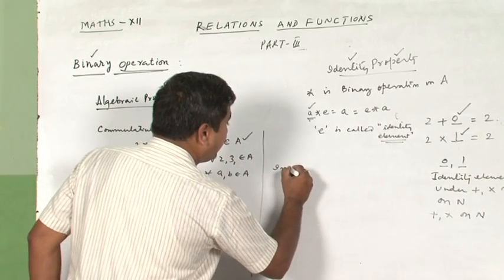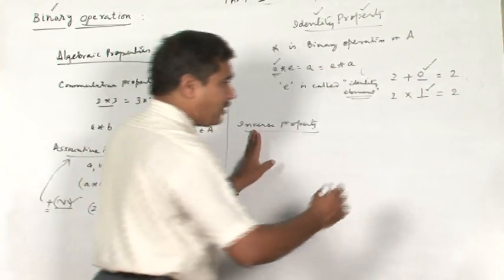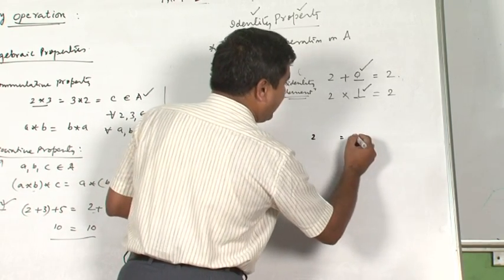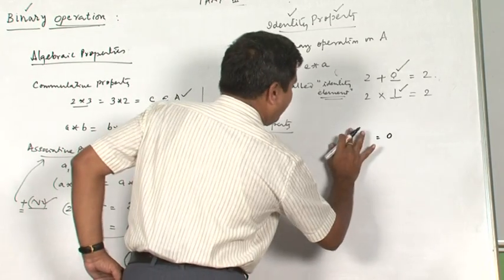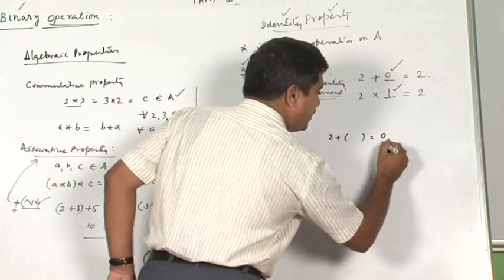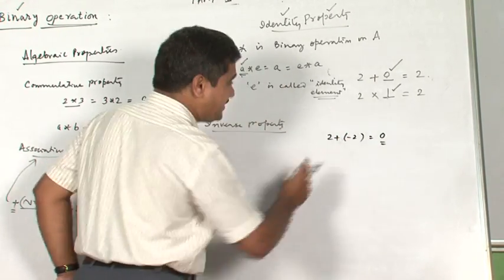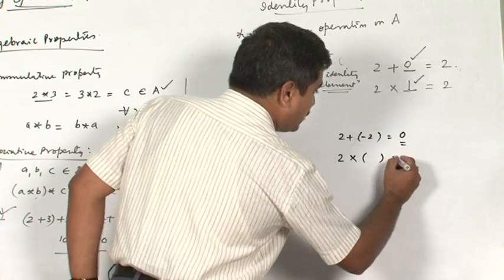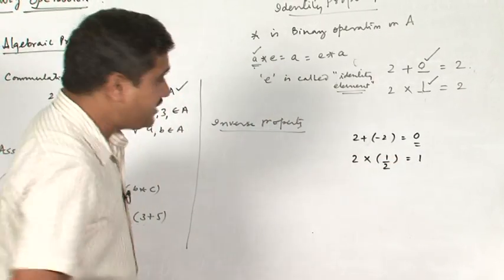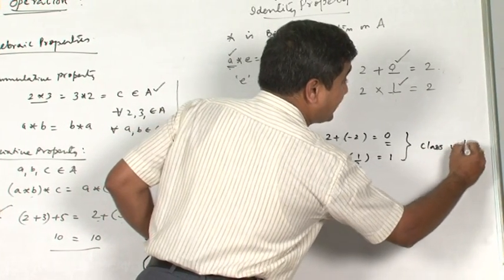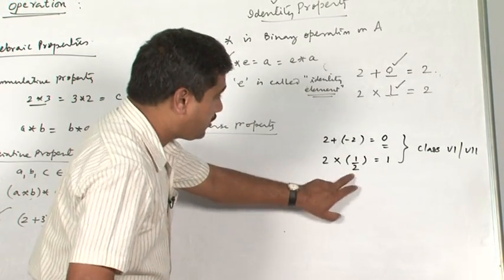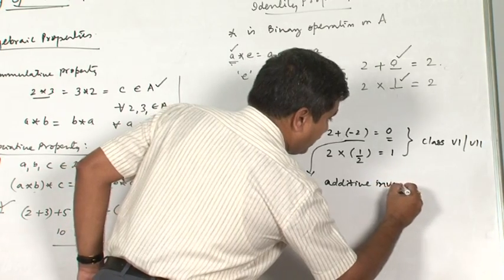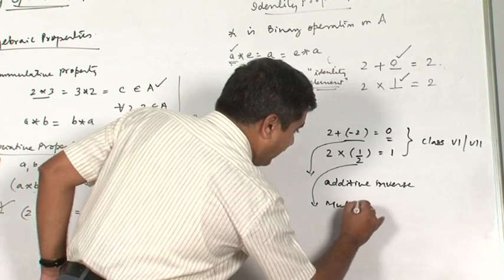Next is the inverse property. For example, if 2 is the element and plus is the operation, what must be added to get 0? The answer is −2, the negative of the number. If instead multiplication is the operation, what must be multiplied with 2 to get 1? The answer is 1/2. The number −2 is called the additive inverse, and 1/2 is called the multiplicative inverse.